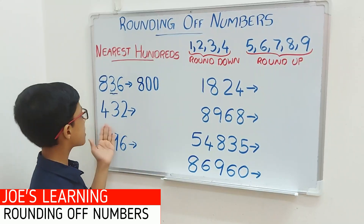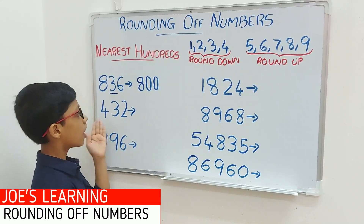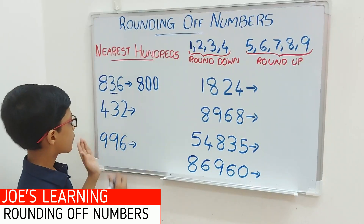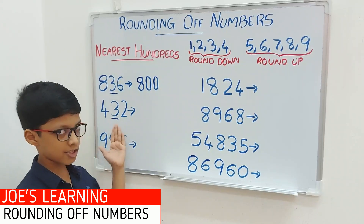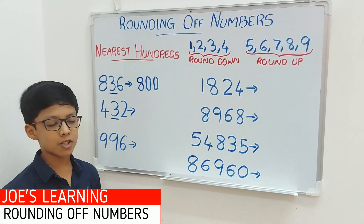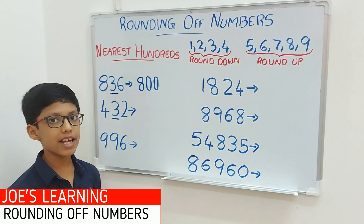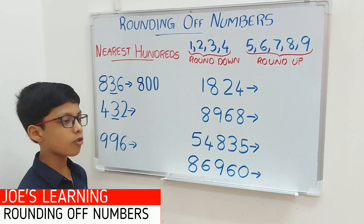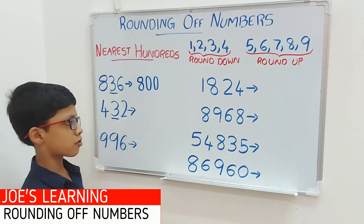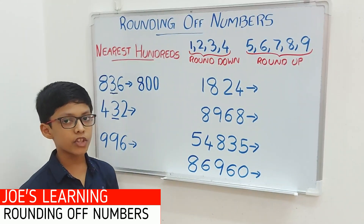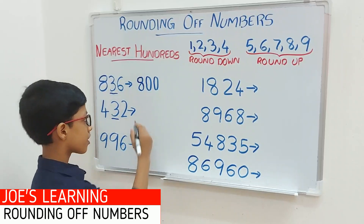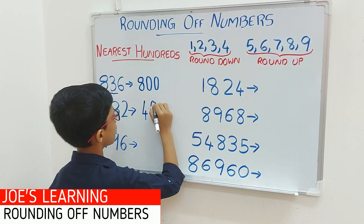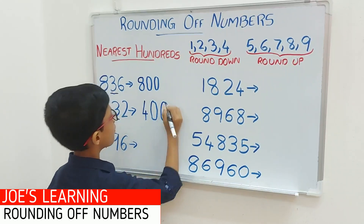Now let's move on to my second example, that is 432. Again we look at the digit in the tens space — 3 is in the tens space. We compare it with 5: 3 is lesser than 5. So we have to put a 0 in the ones and tens space, leaving the rest of the digits as it is. So 432 rounded off to the nearest hundreds equals 400.